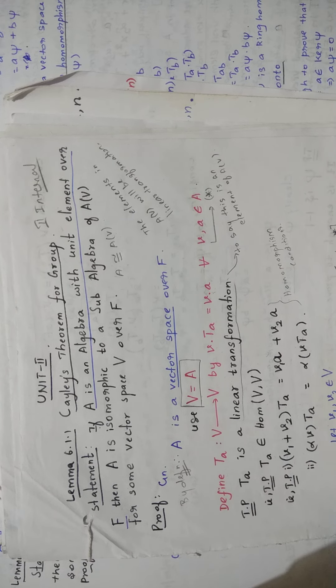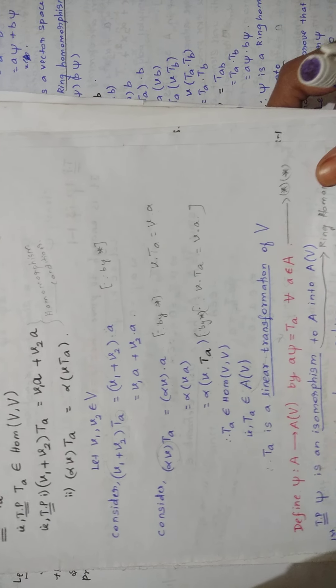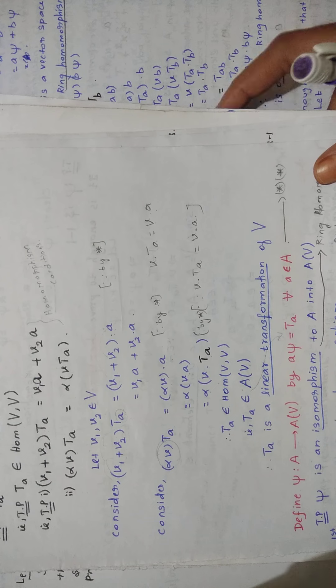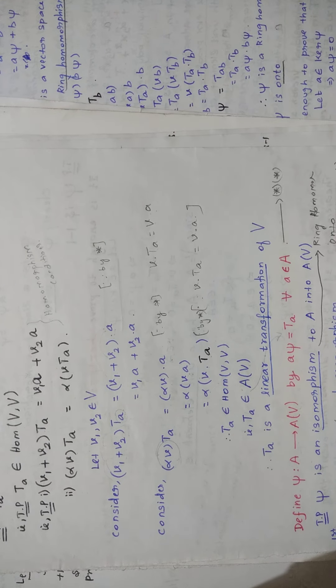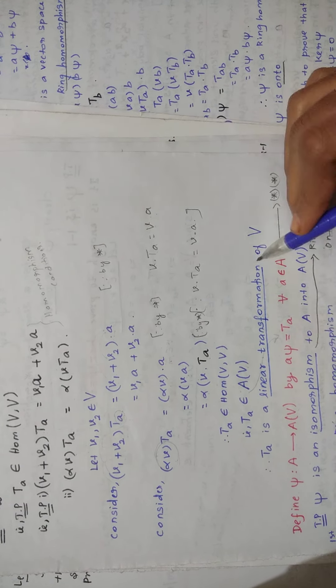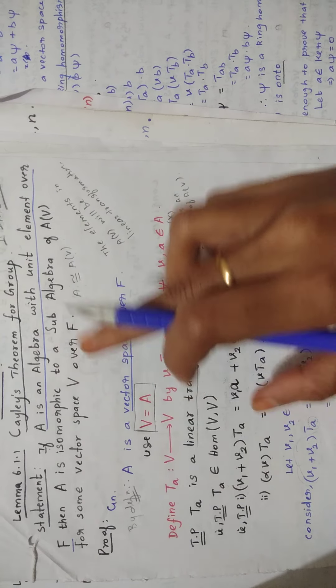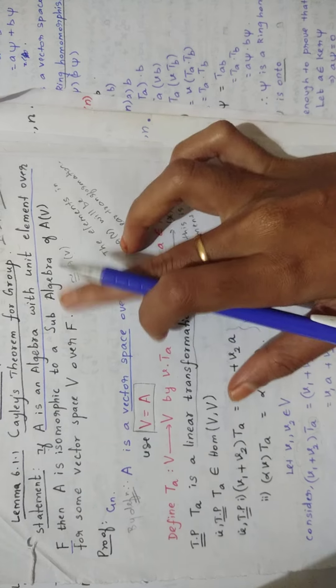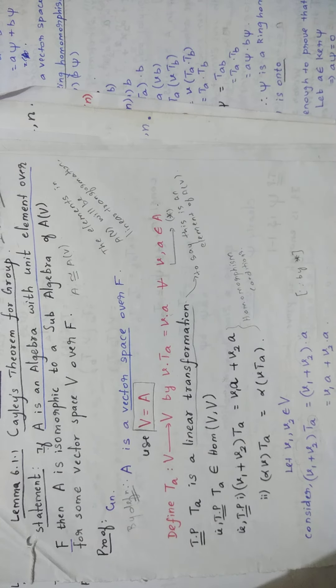This video is about the remaining part of Cayley's theorem for groups. In a previous video we proved that T_A is a linear transformation of the vector space V. Now we are going to prove what is stated in the theorem: that A is isomorphic to a sub-algebra of End(V).